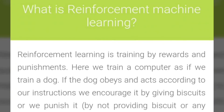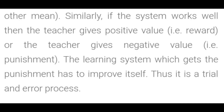What is reinforced machine learning? Reinforced learning is training by rewards and punishments. Here, we train a computer as if we train a dog. If the dog obeys and acts accordingly to our instructions, we encourage it by giving biscuits, or we punish it by not providing biscuits or any other means.